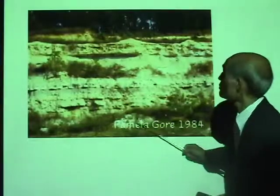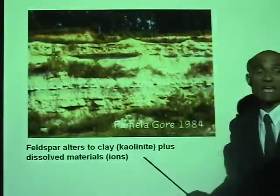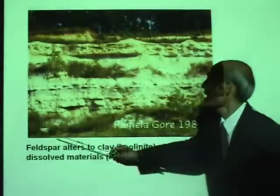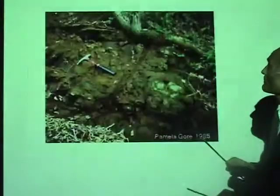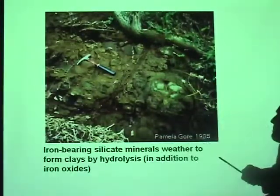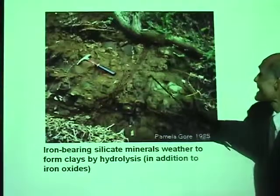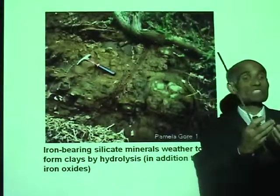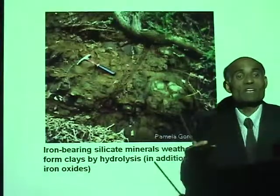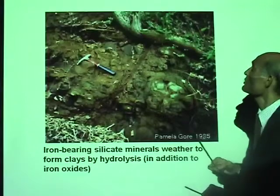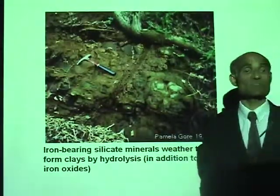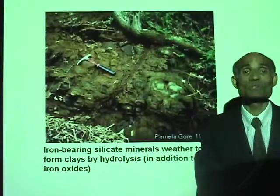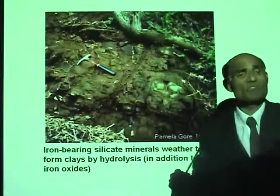Here is another example: feldspar alters into clay due to chemical weathering. The clay is produced by the chemical weathering of feldspar. Another example: iron-bearing silicates weathered to form clays by hydrolysis — by collecting water between crystal lattices and finally breaking down. This is a good example of hydrolysis of iron-bearing silicate minerals. All these are very common in many parts of America, especially in West Virginia.